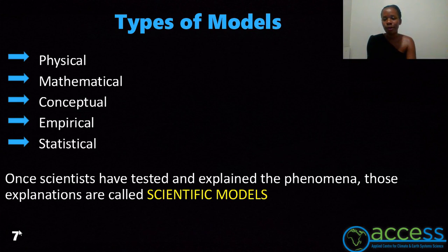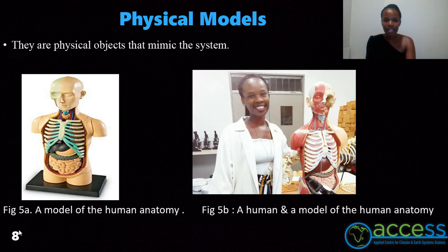Now let us focus on the types of models. We have physical, mathematical, conceptual, empirical, and statistical models. We're going to focus on the first three types because they can be used in computers. Once scientists have tested and explained phenomena, those explanations are called scientific models. Physical models are physical objects — meaning they can be seen with the naked eye — that mimic the system.